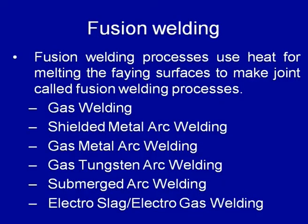The processes in which this fusion of the faying surfaces is carried out include gas welding, shielded metal arc welding, gas metal arc welding, gas tungsten arc welding, submerged arc welding, and electroslag and electrogas welding processes. In all these processes, one thing is common: whether filler metal is used or not, the edges of the components to be welded are brought to the molten state and solidification results in the weld joint.